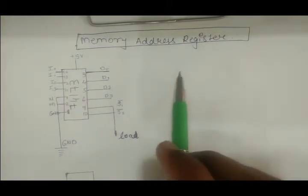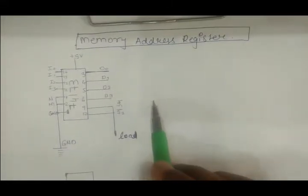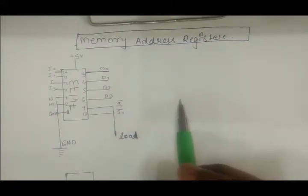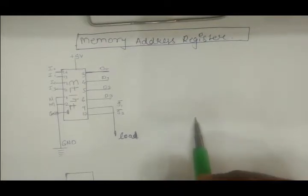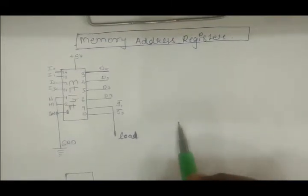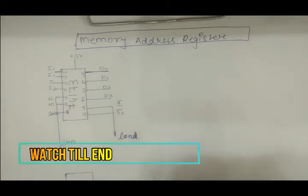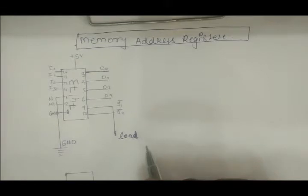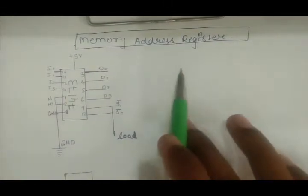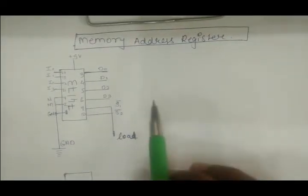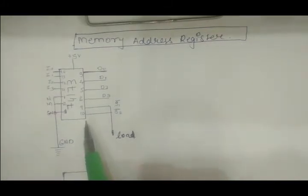In this video I am going to talk about the memory address register. In further coming videos we will be designing the RAM, the output register, and the control unit, and then the bus. The control unit will be our last part, comprising three videos divided according to the design sections. Coming back to this video — memory address register — let's get started.